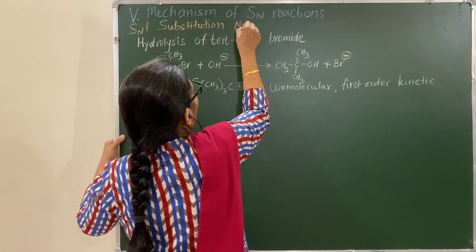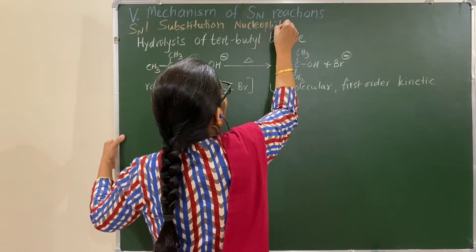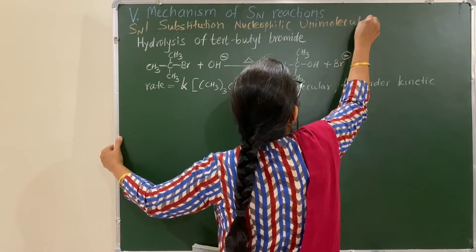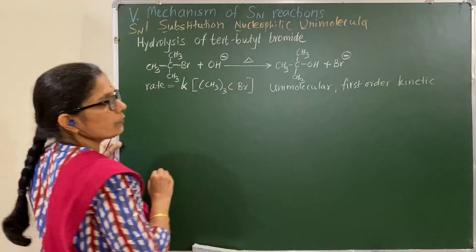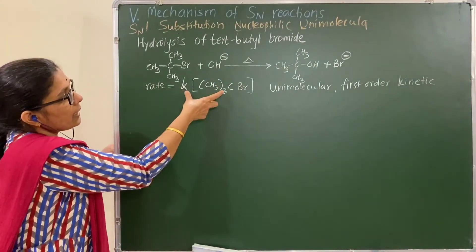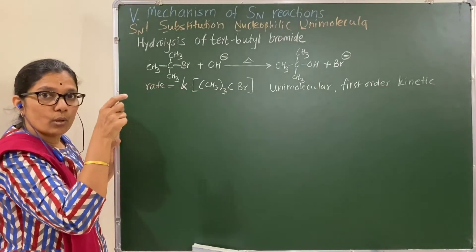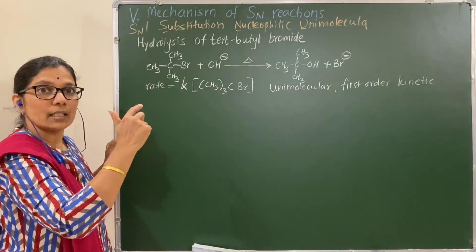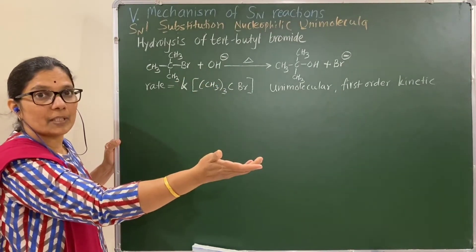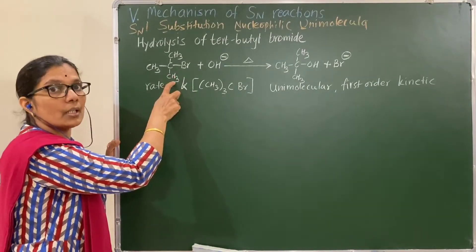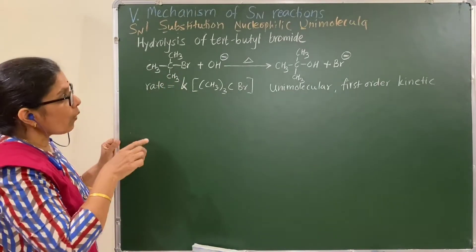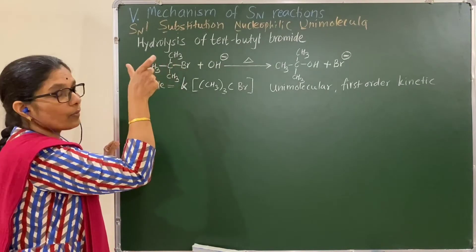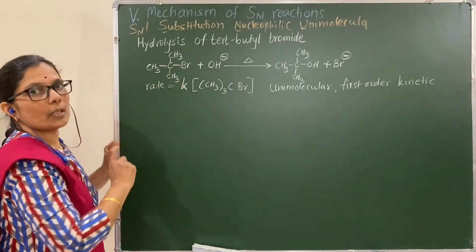This is an SN1 reaction — substitution nucleophilic unimolecular. Only tert-butyl bromide is involved in the slow step, meaning the nucleophile OH⁻ is involved in another step. Therefore this reaction takes place in two steps. Now consider the first step.